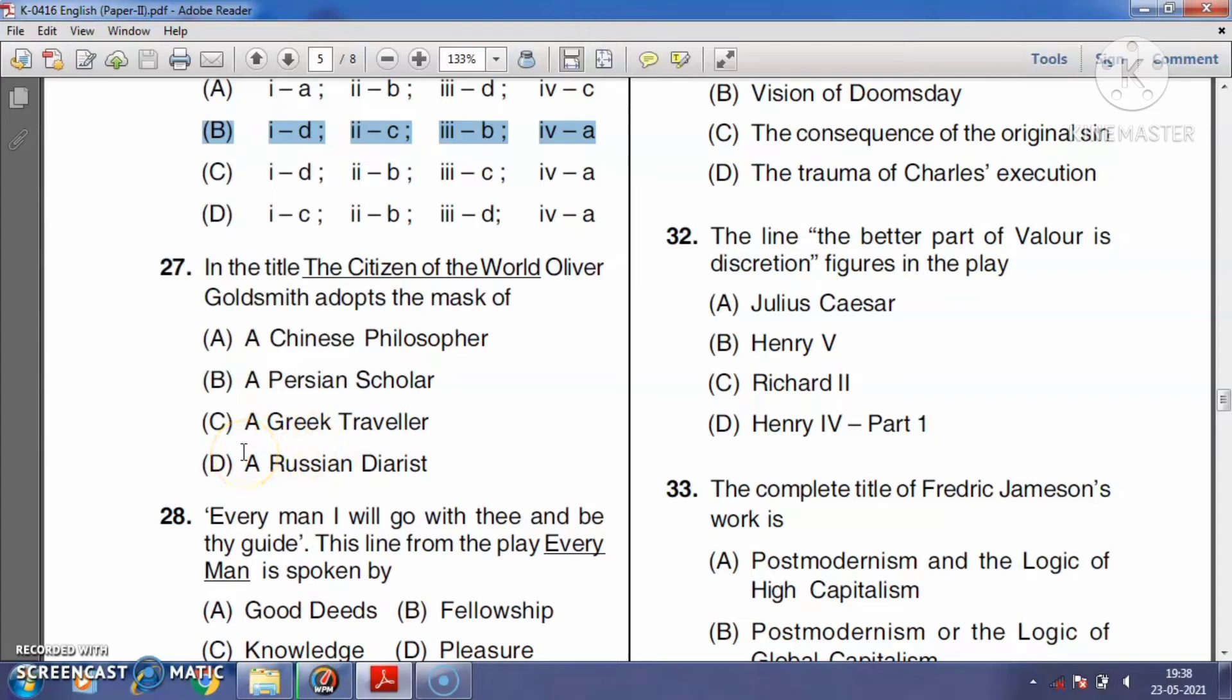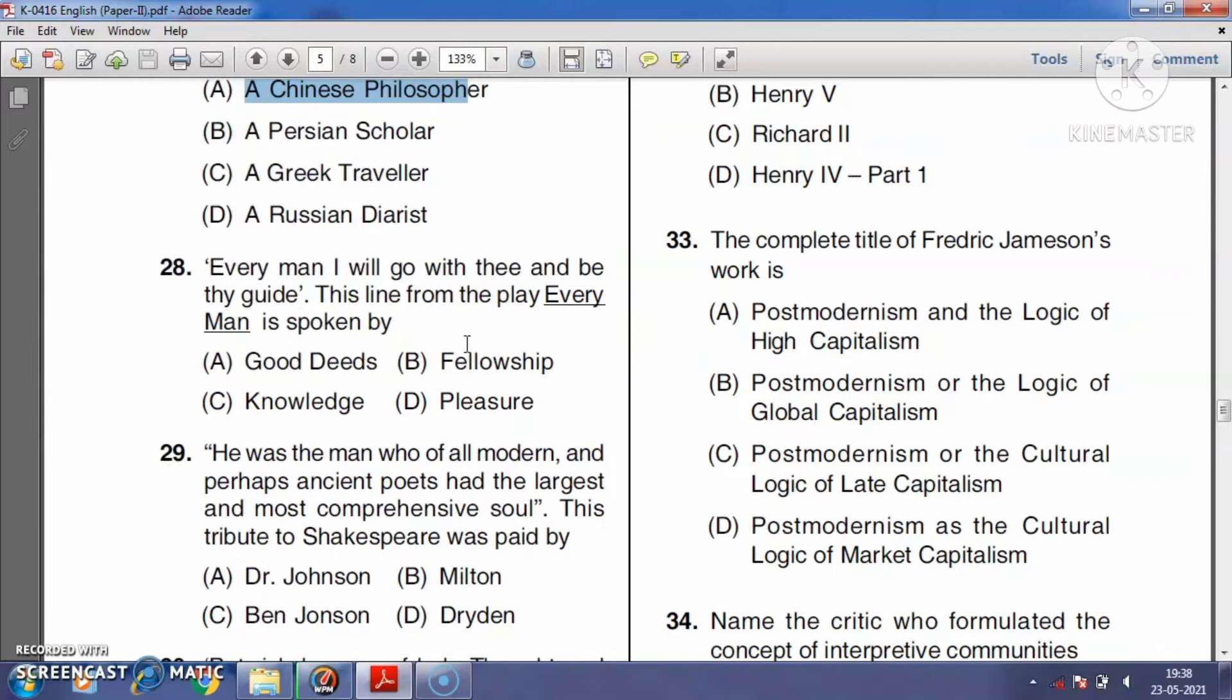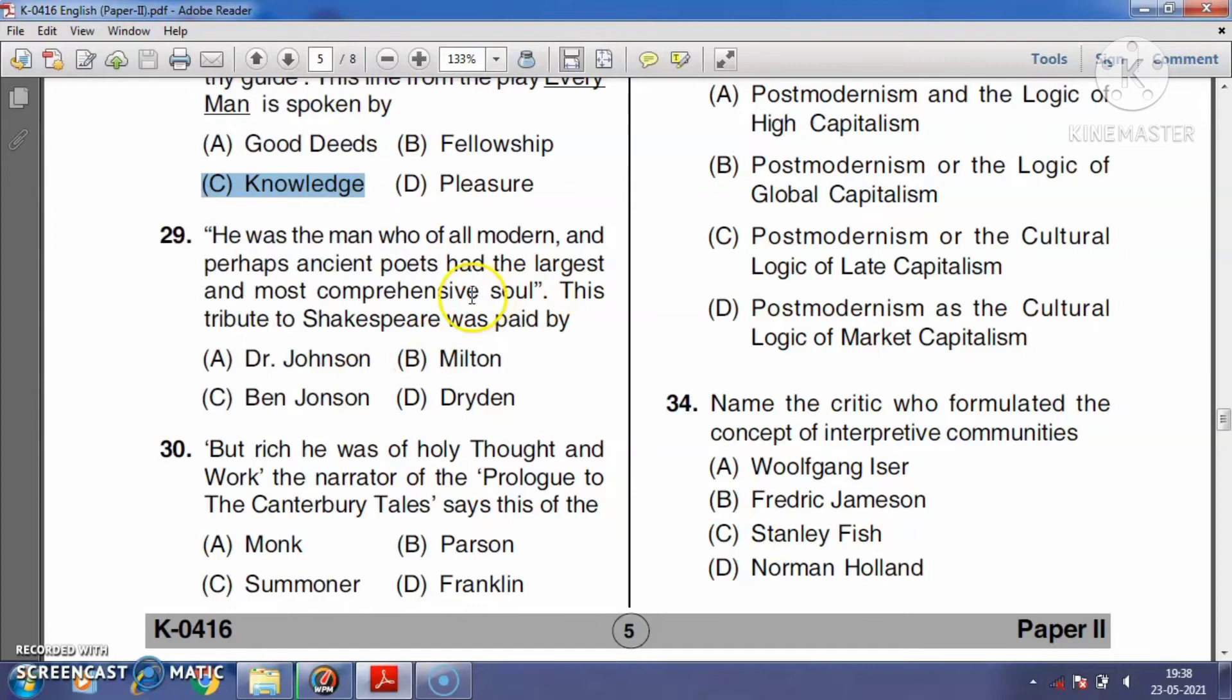Question number twenty-seven: In the title The Citizen of the World, Oliver Goldsmith adopts the mask of a Chinese philosopher, a Persian scholar, a Greek traveler, or a Russian diarist? The Citizen of the World is a collection of letters written by Oliver Goldsmith from the perspective of Lien Chi Altangi, a Chinese philosopher. So the right answer is option A, a Chinese philosopher. Question number twenty-eight: 'Every man, I will go with thee and be thy guide.' This line from the play Everyman is spoken by good deeds, fellowship, knowledge, or pleasure? The right answer is option C, knowledge.